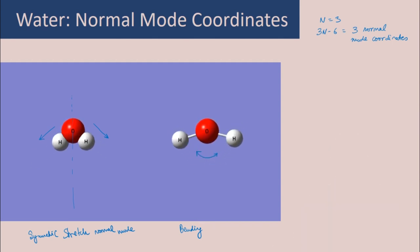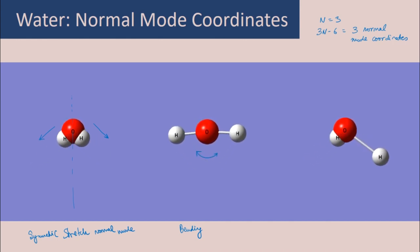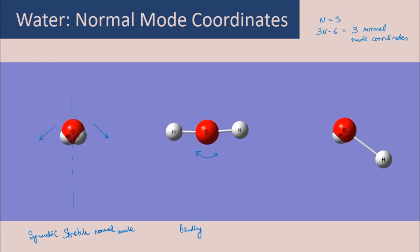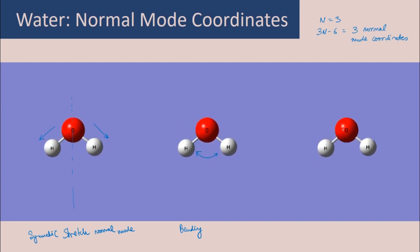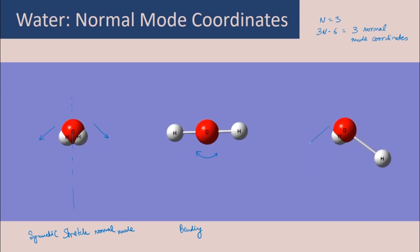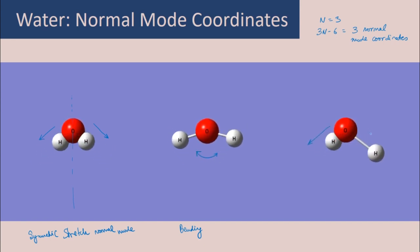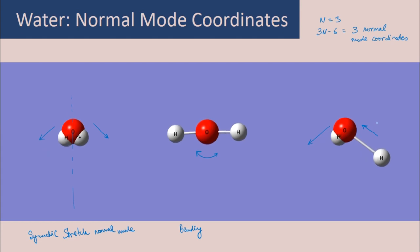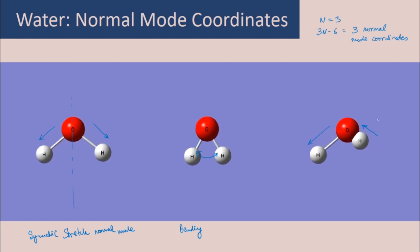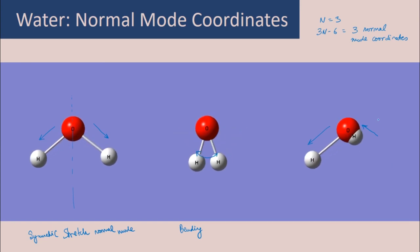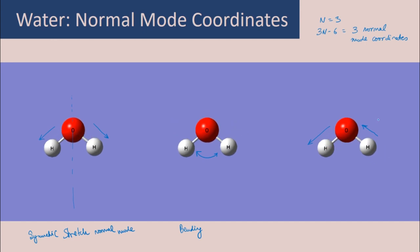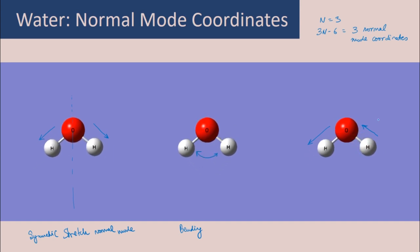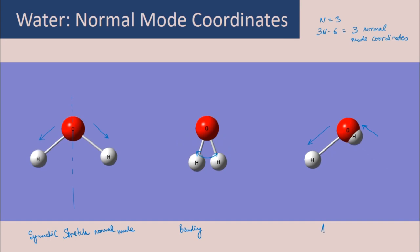The third normal mode of water is primarily a stretching motion, but asymmetric: the O−H bond in one case is increasing while the other is decreasing, and the oxygen moves to conserve the center of mass. This motion does not conserve the symmetry of the water molecule, so it is called the asymmetric stretch normal mode of water.